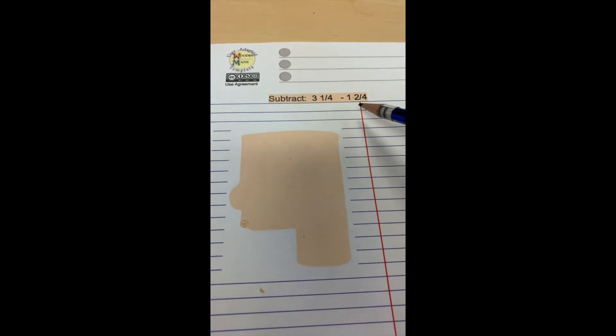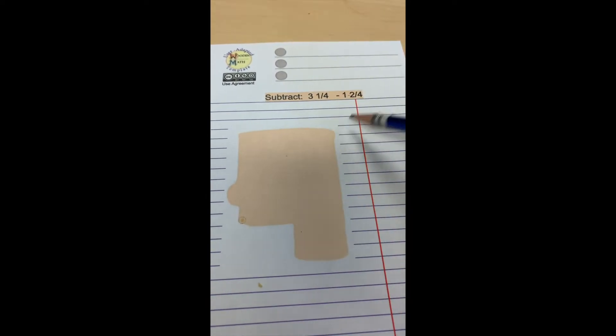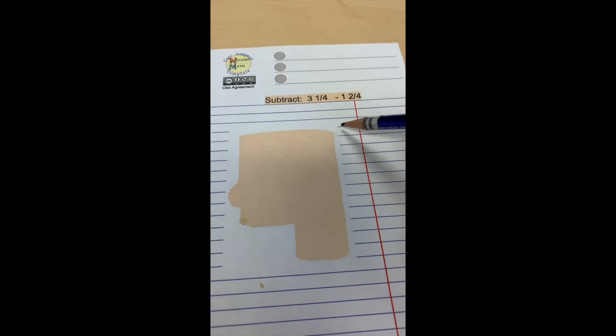Okay, we're going to do a subtraction with regrouping problem. We have common denominators. In this case, we're going to use quarter-inch lined paper to define this.